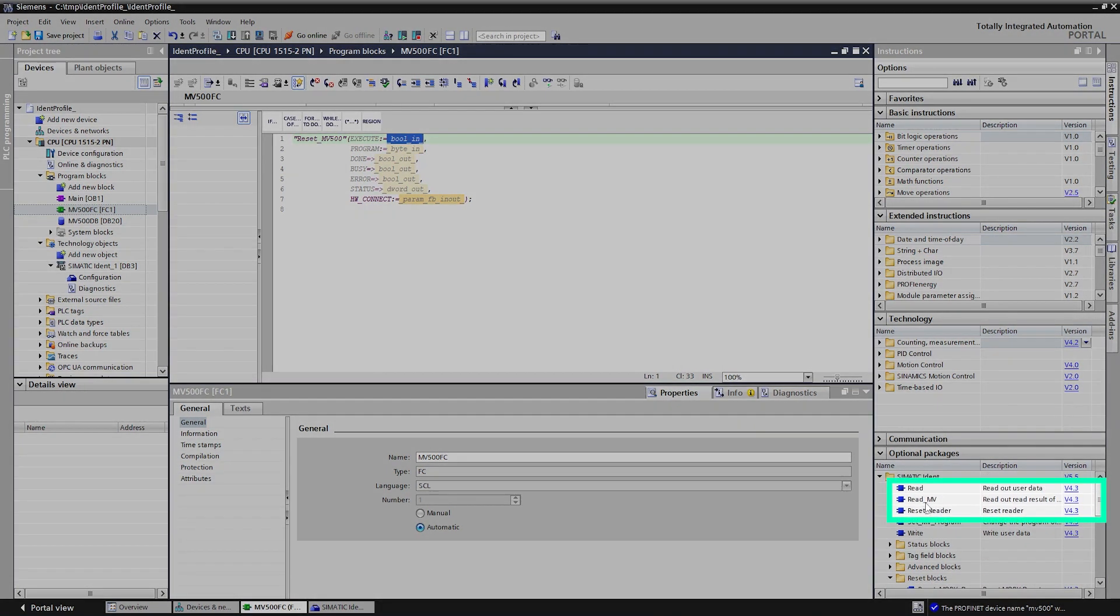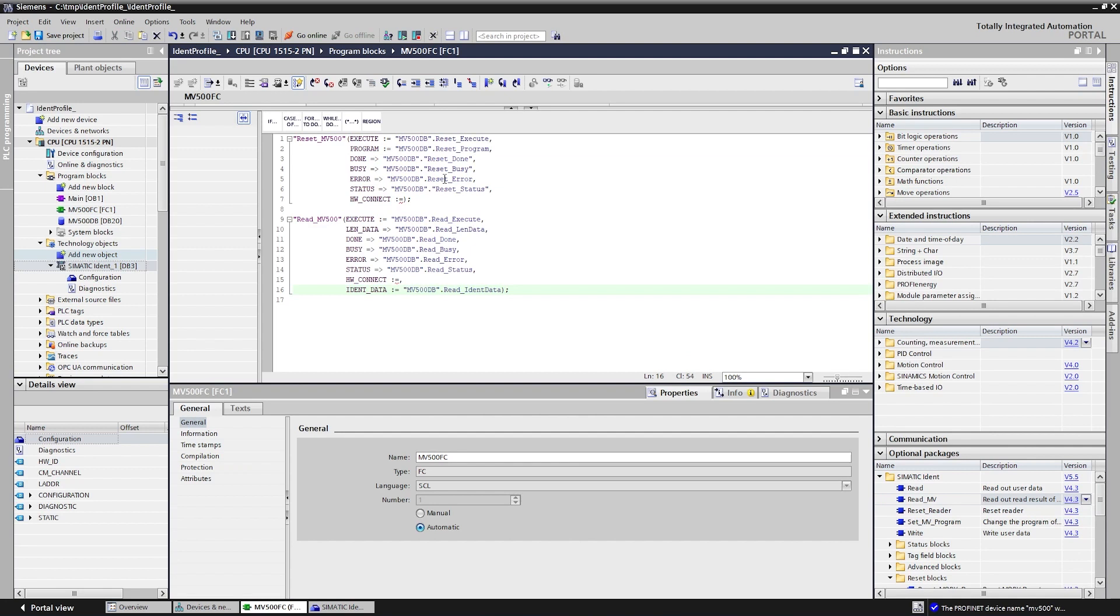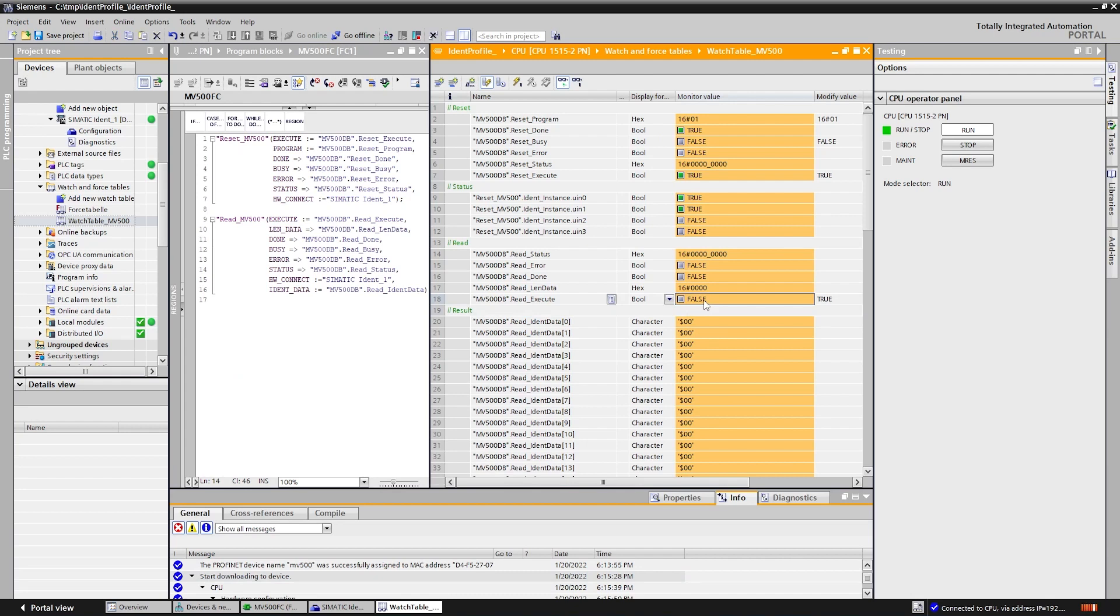The second one is called READ. When the PLC wants to start a code reading, it will activate the camera. The read results are available immediately.